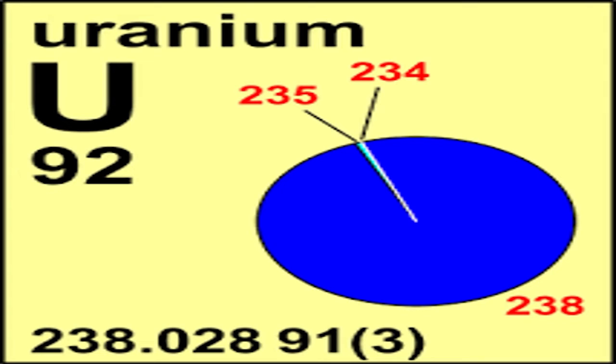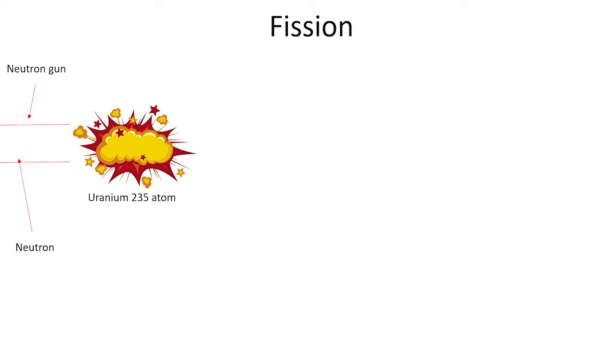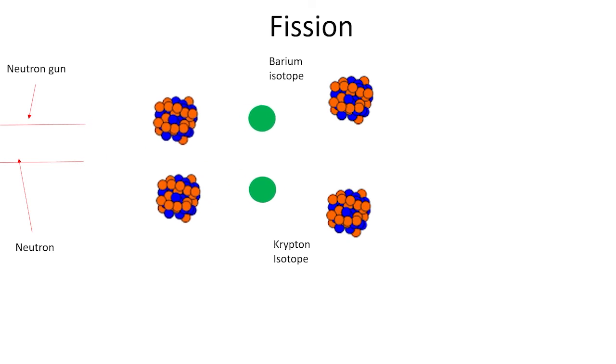In nuclear reactors, this atom is uranium-235. To split the atom, a neutron is fired at the atom at a lower speed so that the atom absorbs it. This causes the atom to become unstable and split into different lighter elements such as barium and krypton.